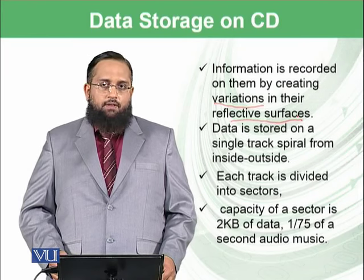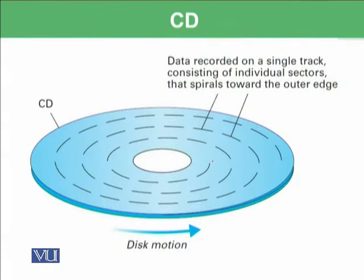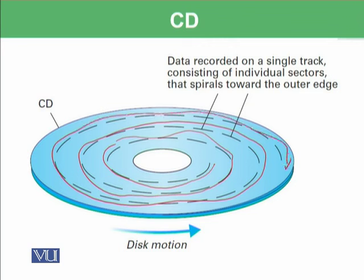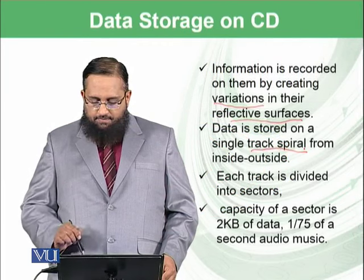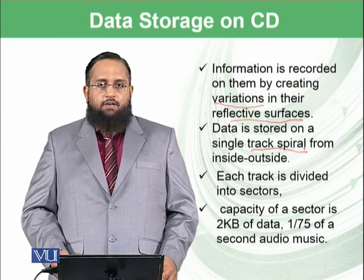This is different with respect to magnetic systems which you learned in the previous module. In a CD, the spiral starts from the inside and goes outward. It is all called one track, so there are no multiple tracks available in CDs. It has a single track which is spiral from inside to outside, and each track is divided into sectors.